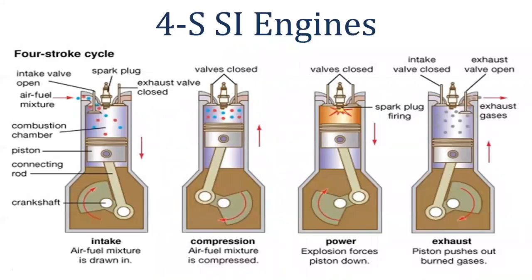First, we will understand what '4-stroke' means. 4-stroke means four piston strokes per cycle. When we studied the classification and nomenclature, there was a term called 'stroke.' Stroke means the total length traveled by the piston from TDC to BDC. So, what does 4-stroke mean? The piston moves up and down 4 times.